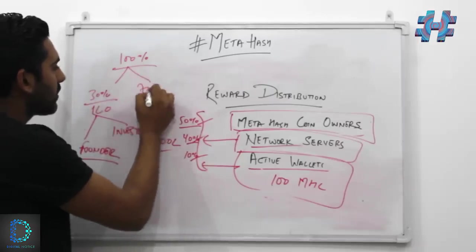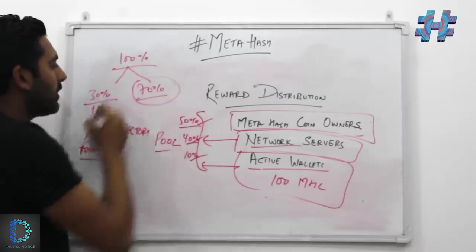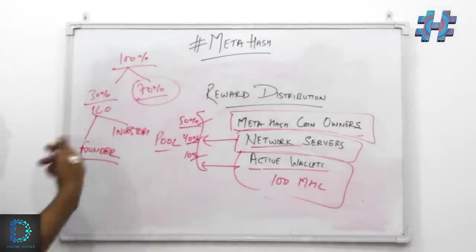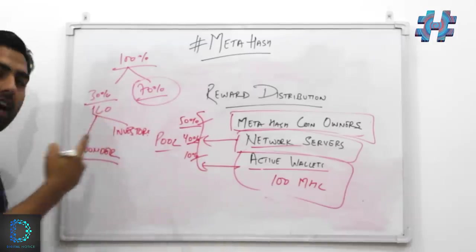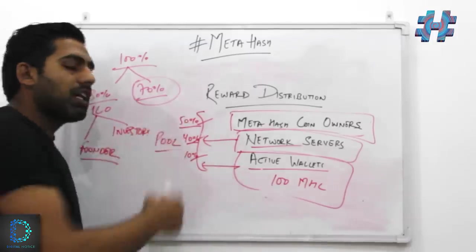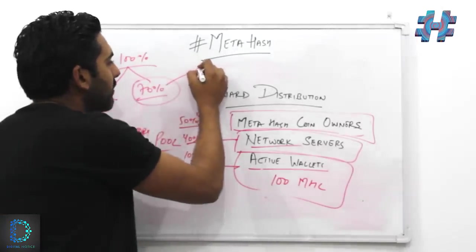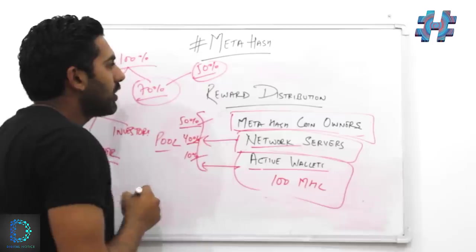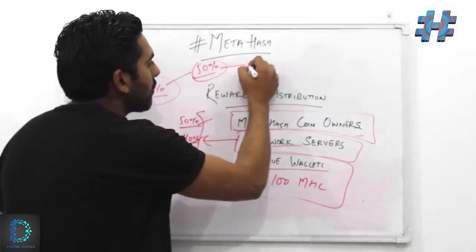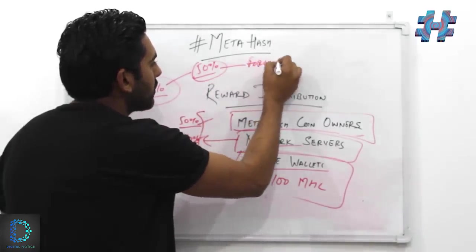The rest of the coins were not existing at the time of ICO; they were to be emitted later on into the network. Out of these 70%, 50% of the coins were to be emitted out in the form of forging, in the form of rewards with the help of forging.